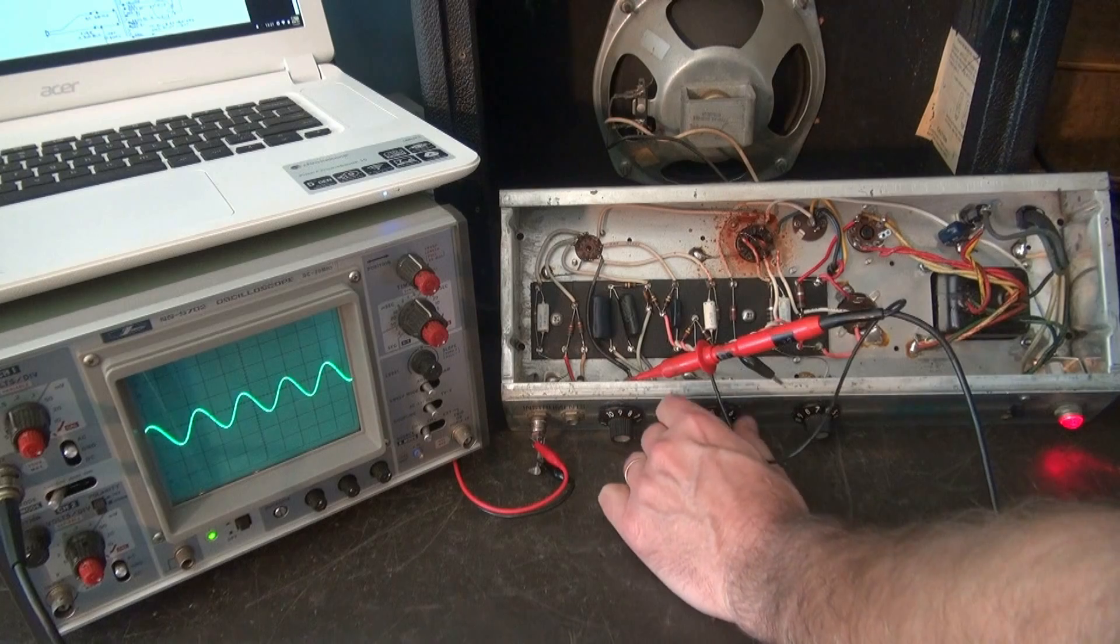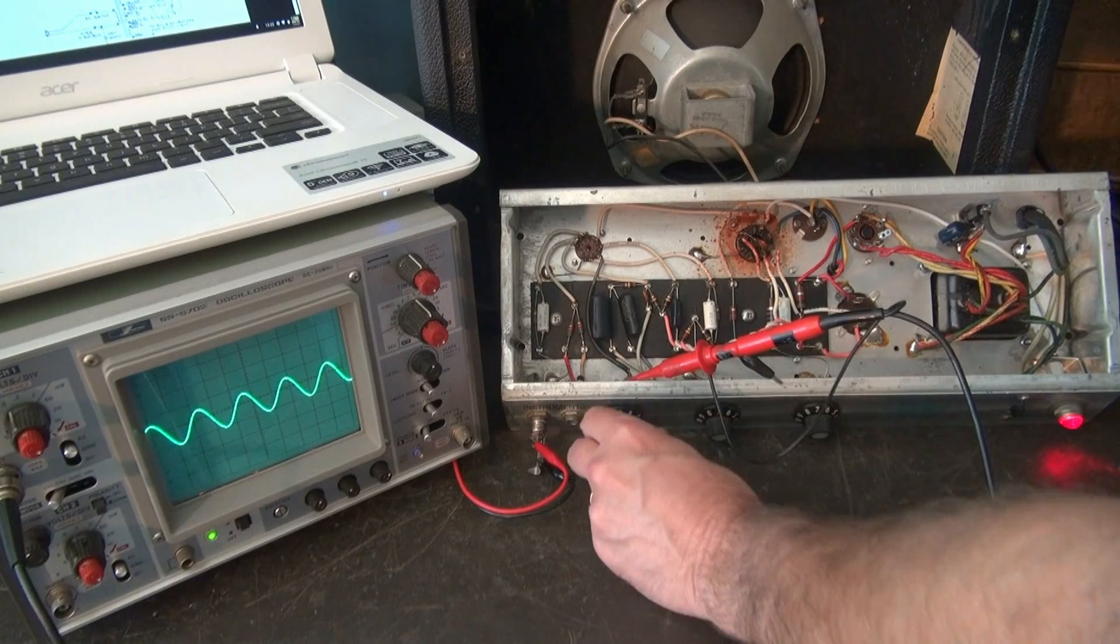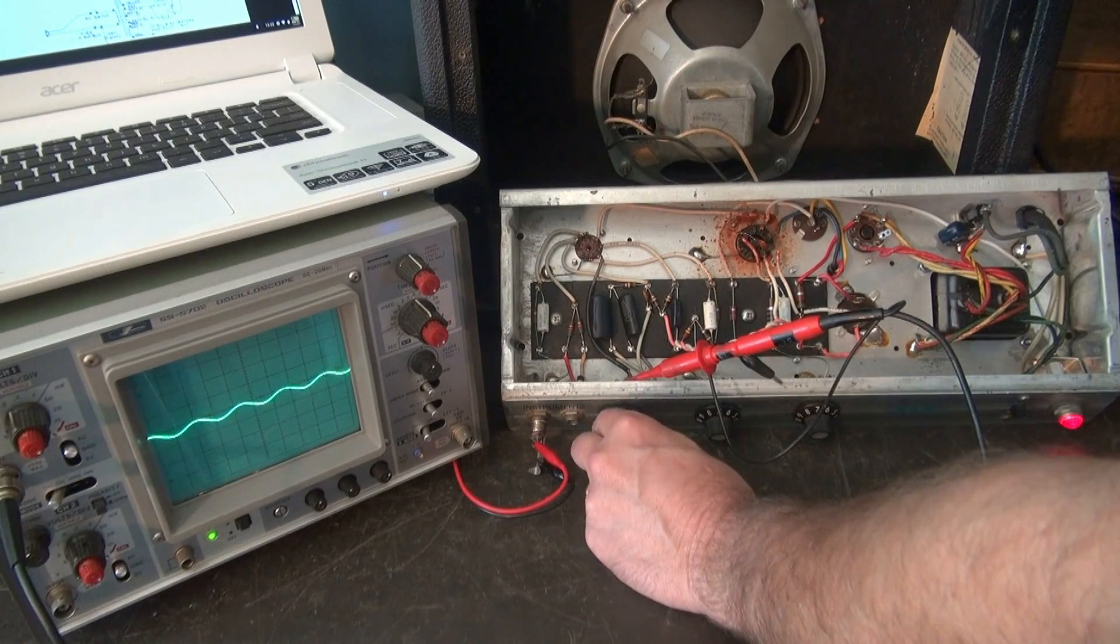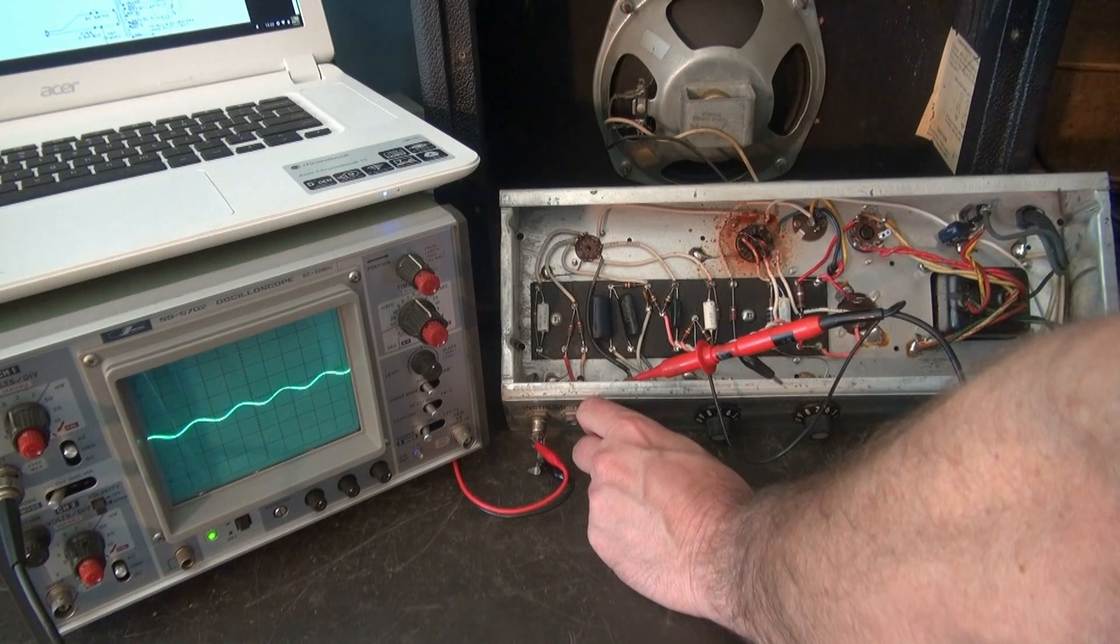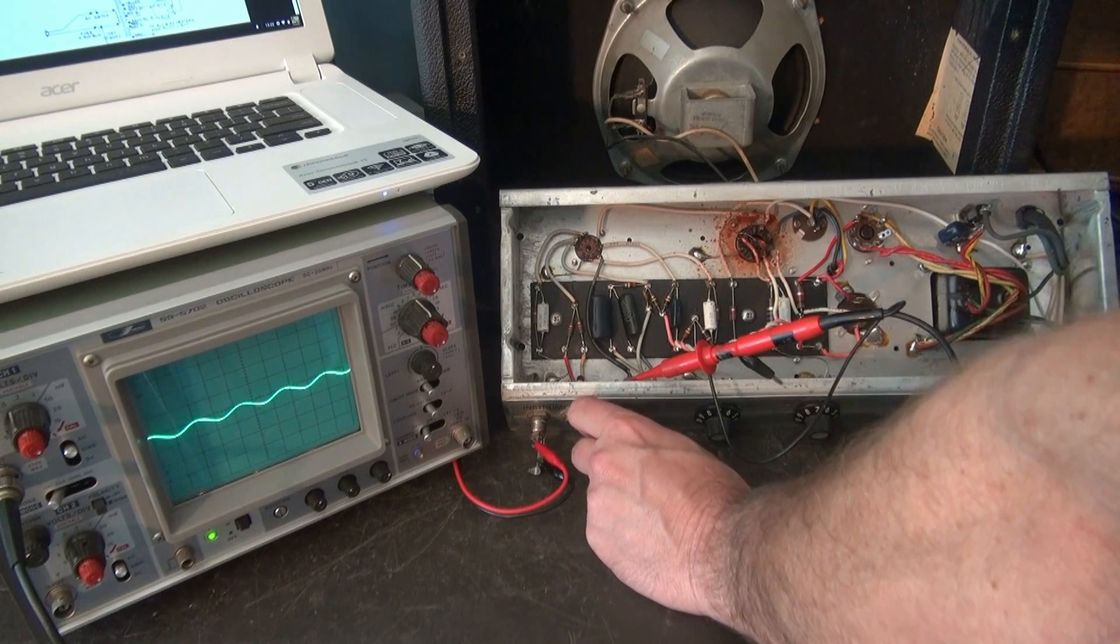And yes, it's there. And you'll see that the treble control here affects that. So now the next question is, what does the plate of the second triode look like? So let's go take a look at pin 6.